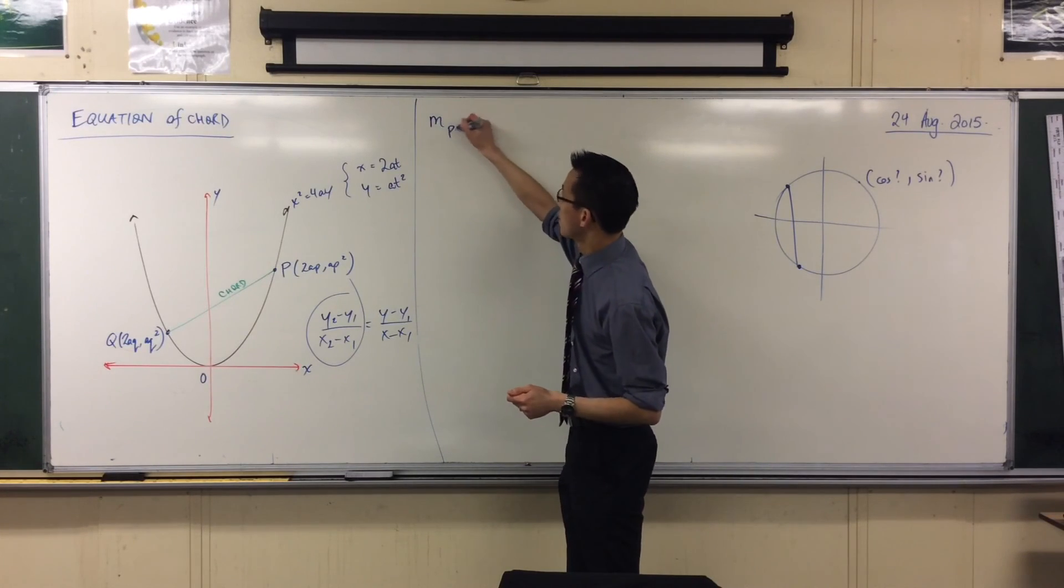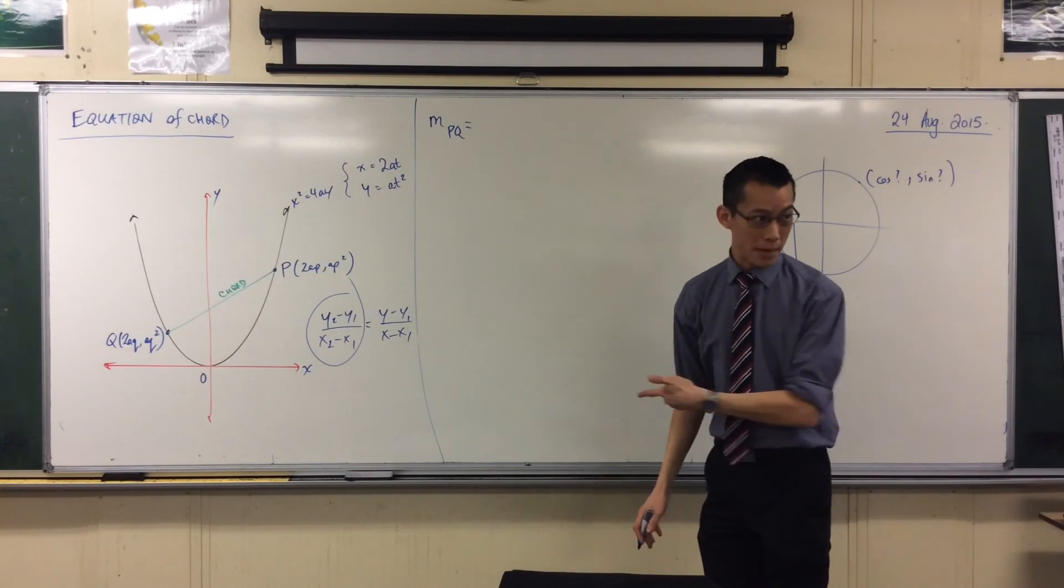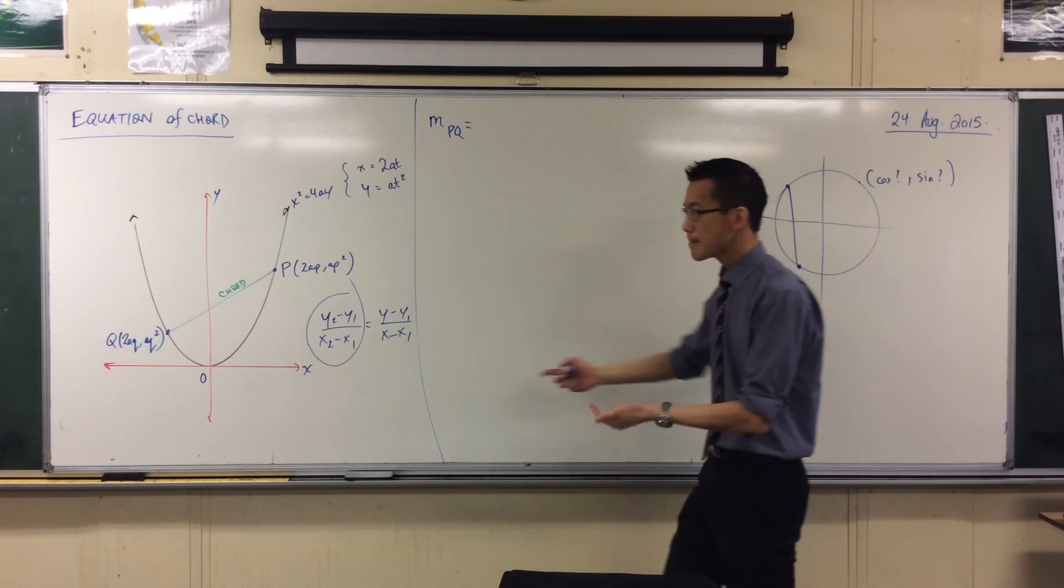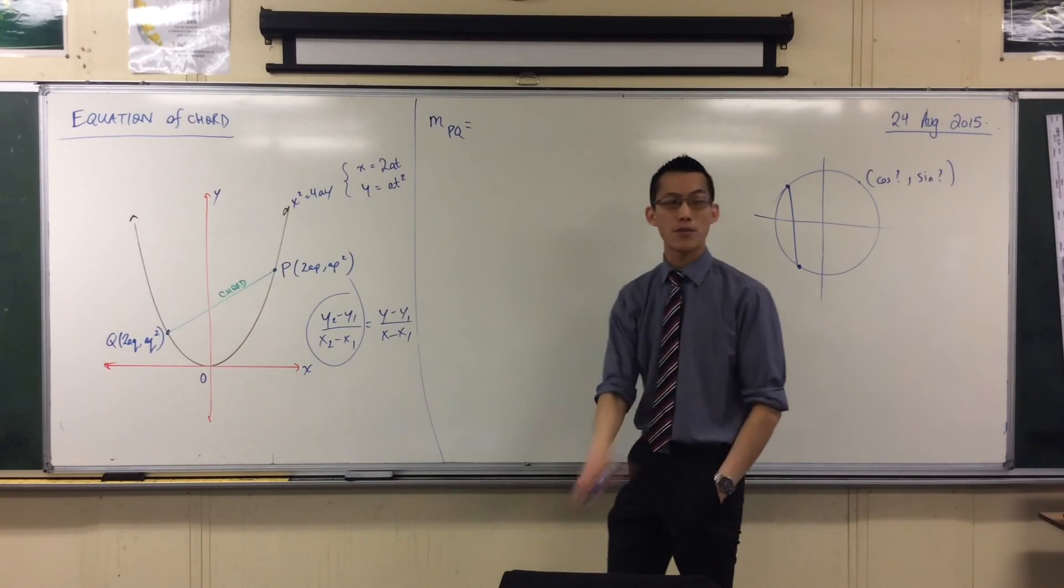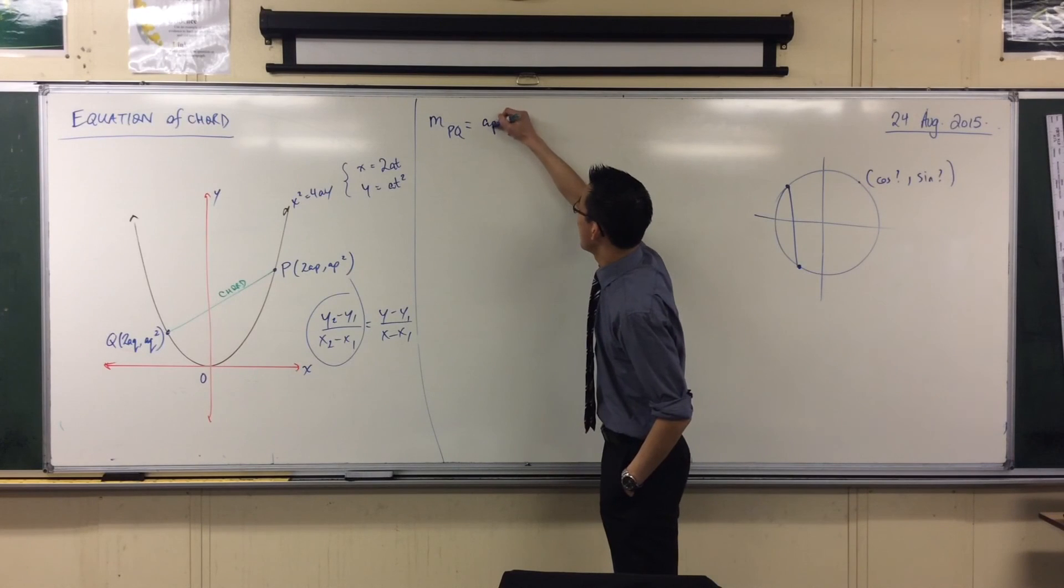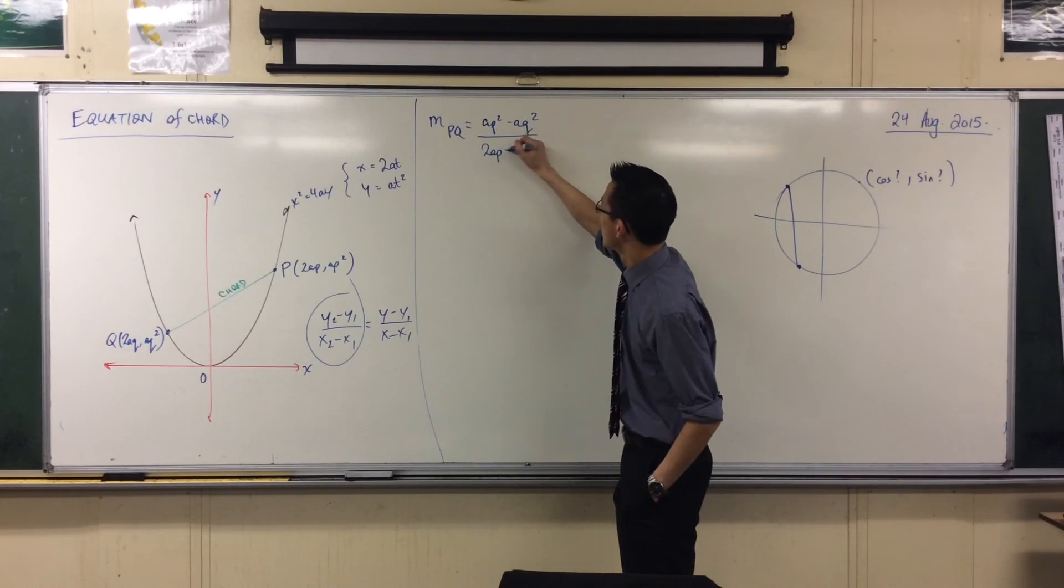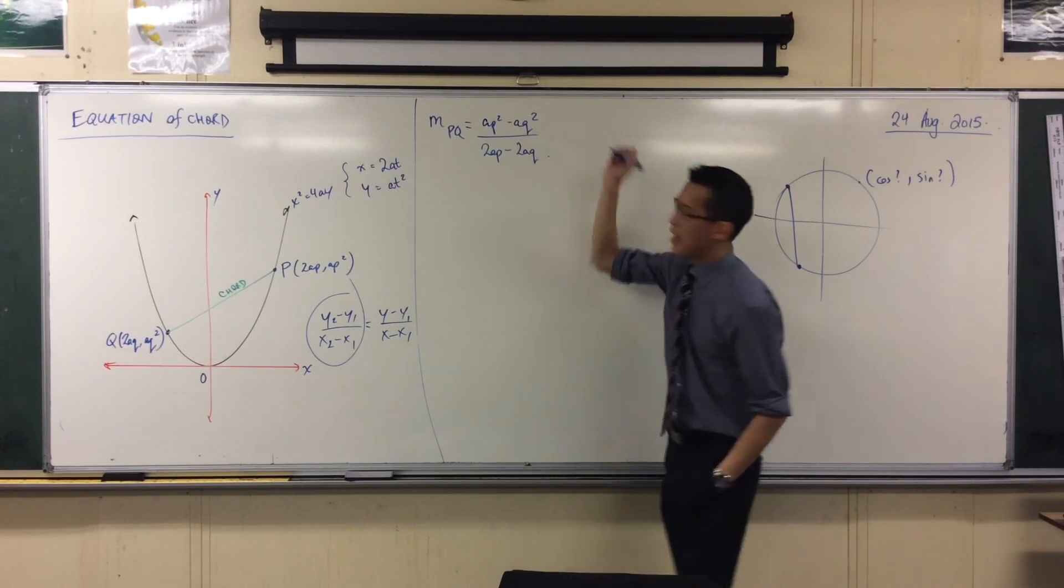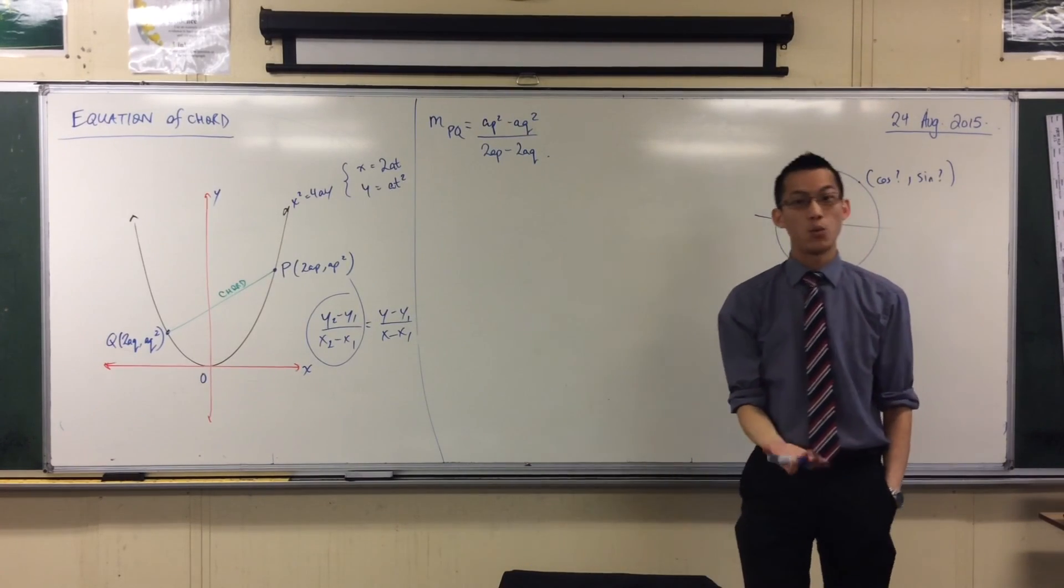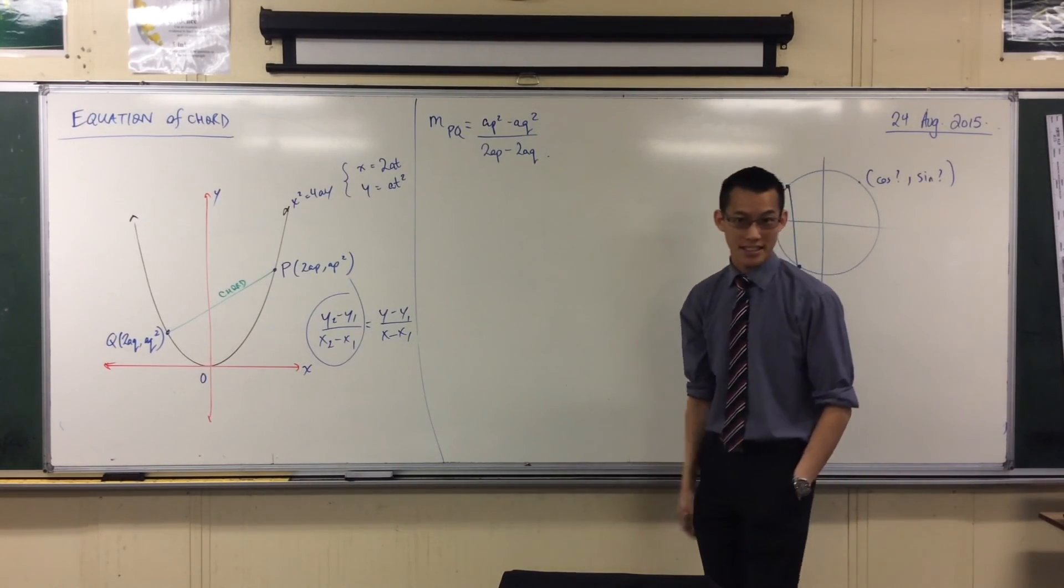So let's do this. The gradient of this chord PQ, right? I've got two points. Let's just knock this out. Rise over run, yeah? Rise over run, and of course you could put P or Q first, it wouldn't matter. It's going to factorize out in exactly the same way.